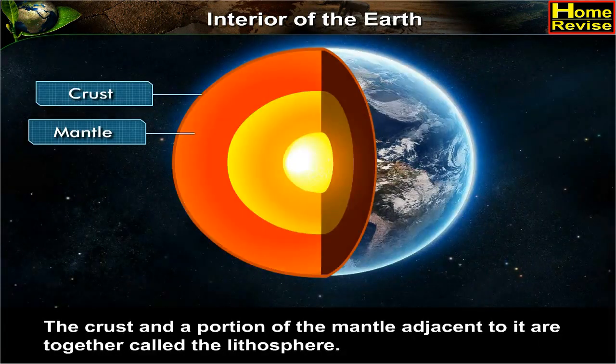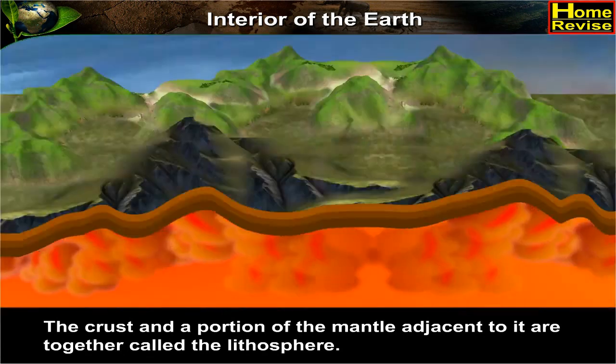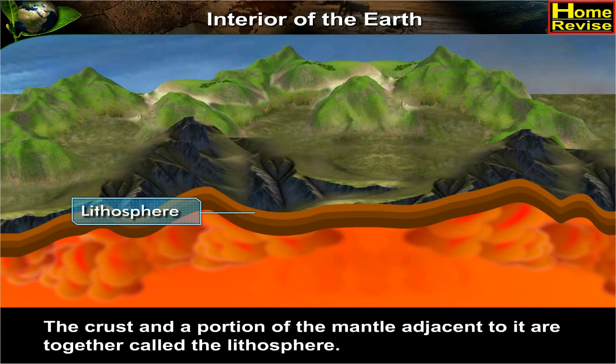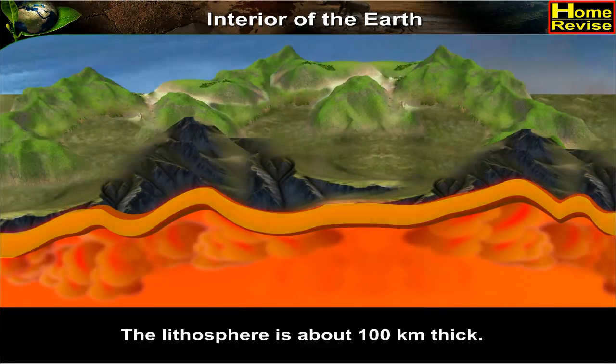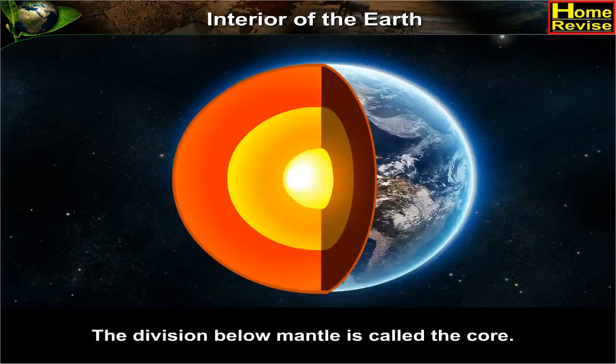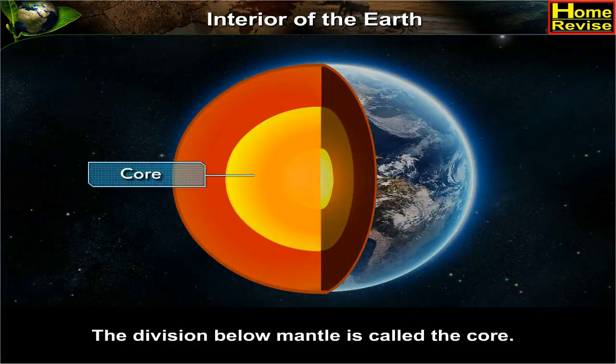The crust and a portion of the mantle adjacent to it are together called the lithosphere. The lithosphere is about 100 kilometers thick. The division below the mantle is called the core.